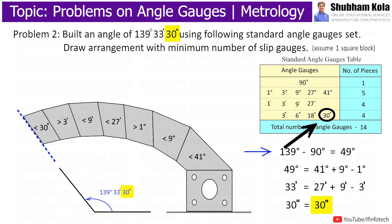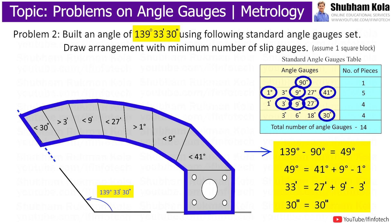The 30 seconds angle gauge is already available in the standard set of angle gauges. So in this way, we can construct an angle of 139 degrees, 33 minutes, and 30 seconds by using the minimum number of angle gauges from the standard angle gauge set.